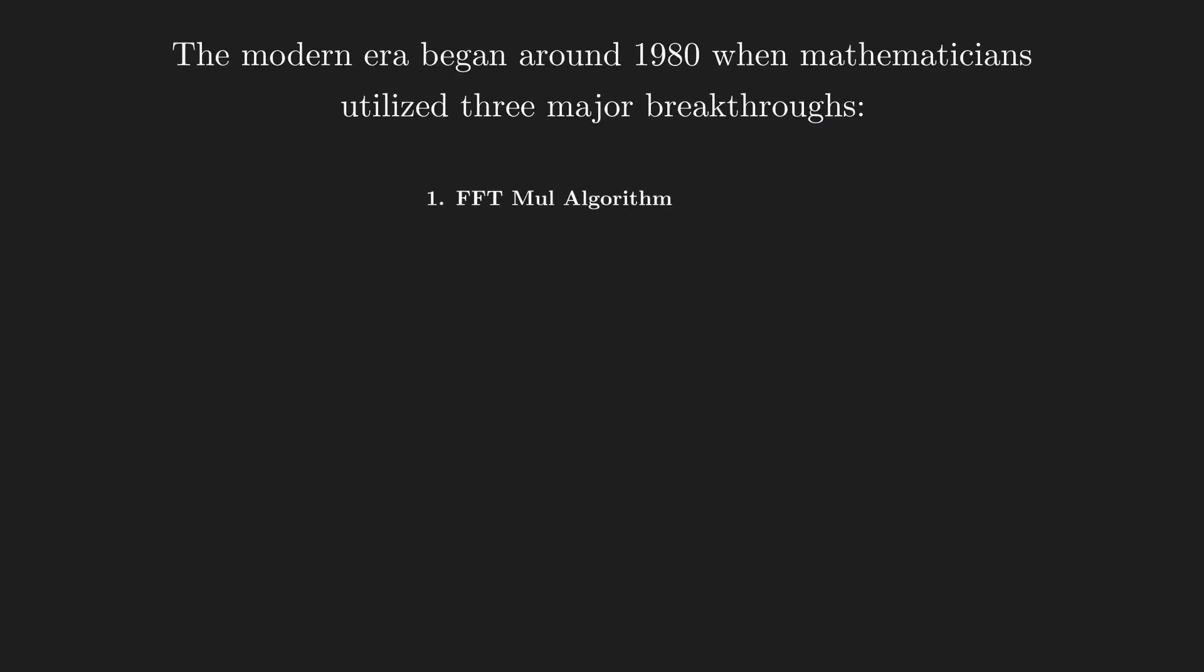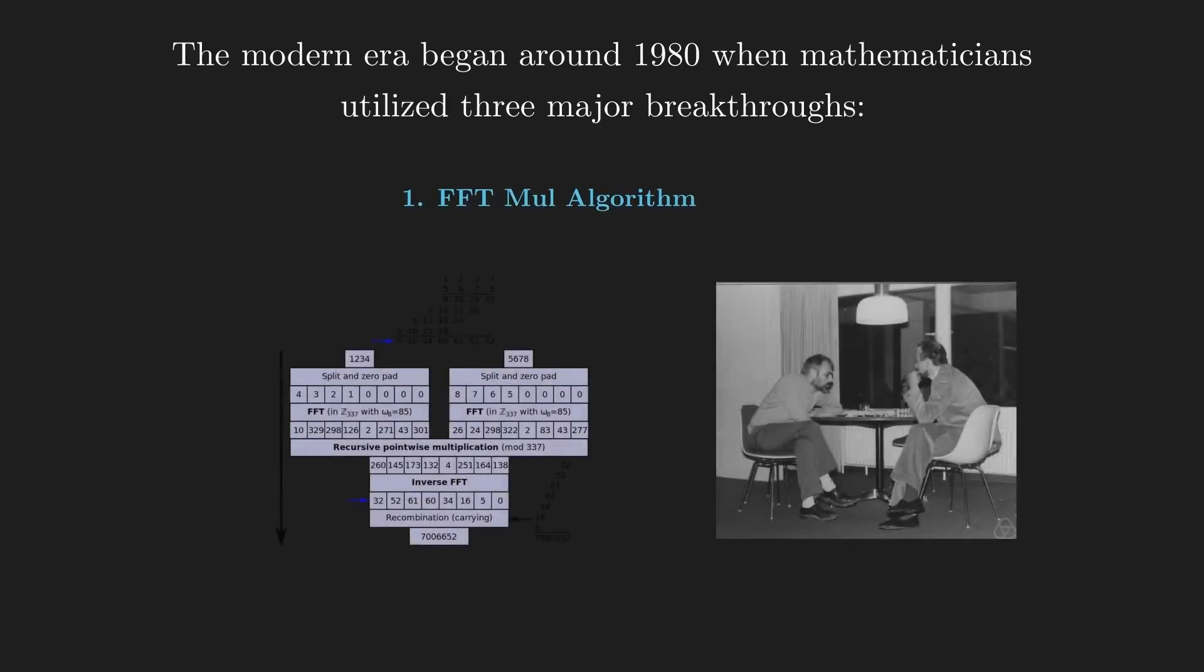First, the fast Fourier transform algorithm significantly sped up multiplication, an essential operation in all Pi computations. With FFT, multiplying long numbers became nearly linear in time, drastically reducing computation time per Pi.